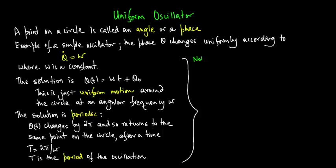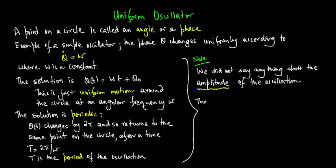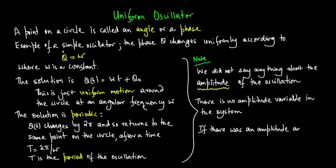Note that we actually did not say anything about the amplitude of the oscillation. There is actually no amplitude variable in the system. If there were an amplitude and a phase variable, then we would be in a two-dimensional phase space.